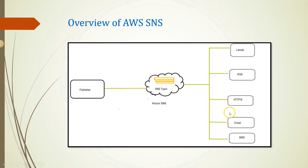In Amazon SNS there are two types of clients: publisher and subscriber, also referred to as producer and consumer. Publishers communicate asynchronously with subscribers by producing and sending a message to a topic, which is a logical access point and communication channel. Subscribers — such as web servers, email addresses, Amazon SQS queues, and Amazon Lambda functions — consume or receive messages over supported protocols like SQS, HTTP, Email, SMS, and Lambda when subscribed to a topic.